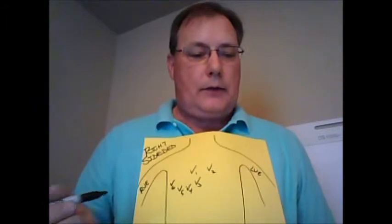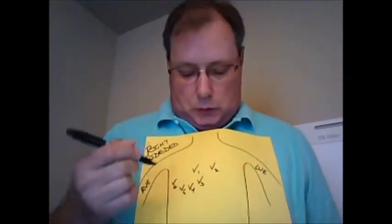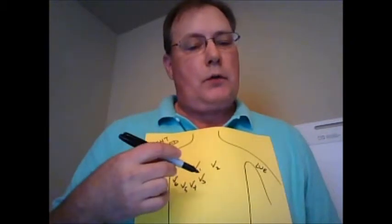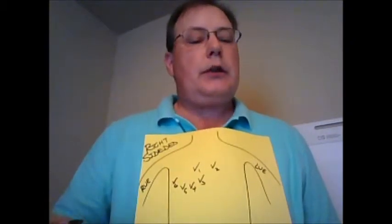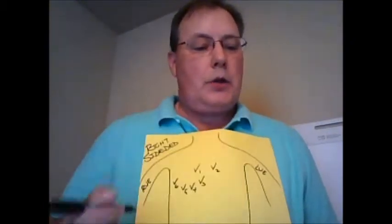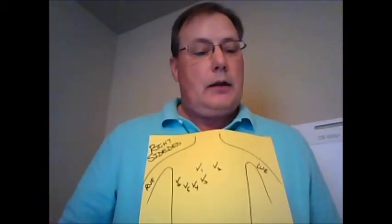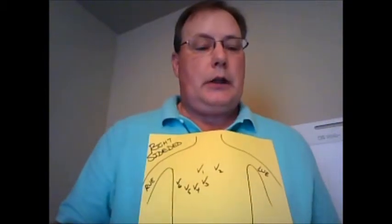Now, V1 and V2 can stay the same. You don't have to move V1 and V2, but you take V3, V4, V5, V6, you move them to the right side, do your EKG just like you would normally, and just make sure that you write on it that it's a right-sided EKG. And that is it. That is all there is to doing a right-sided EKG.